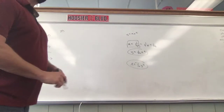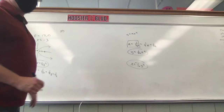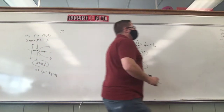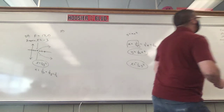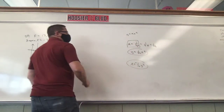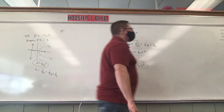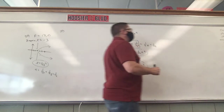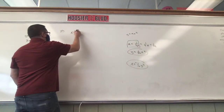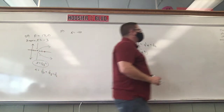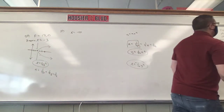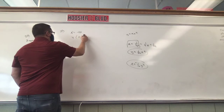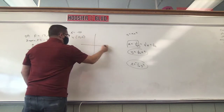Let's look at number 31. The focus is 2/3, 0. The directrix is x equals negative 10. And the vertex is 0, 0.